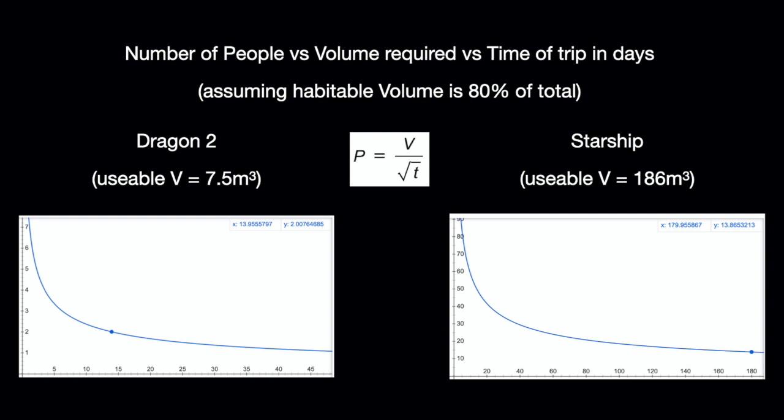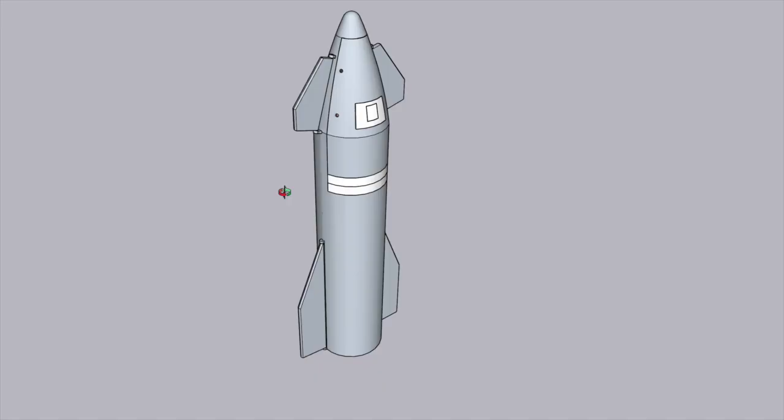So, using the formula as my guide, knowing Starship's calculated volume and expected trip time, this is what led me to design for 12 people, and is a version I think could be used in the Dear Moon mission.